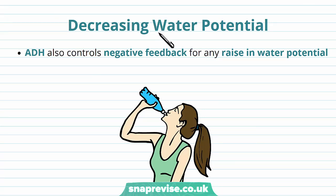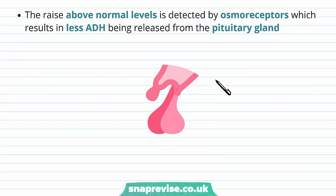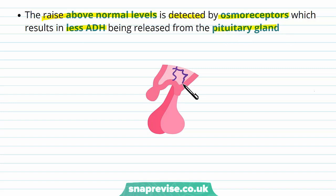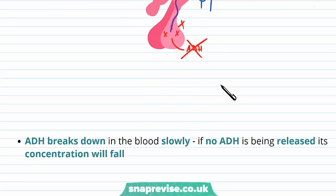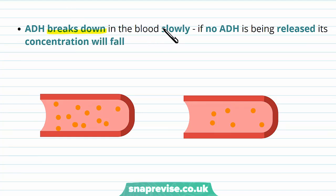Now for the opposite scenario: when ADH is used to decrease the water potential. ADH also controls negative feedback for any rise in water potential — too much water in the blood dilutes our tissues and causes problems. If osmoreceptors detect a rise above normal water potential levels, they tell the pituitary gland to stop secreting ADH. This means no ADH ends up traveling into the blood. Any ADH already in the blood starts breaking down because it has a short half-life.